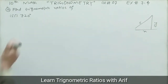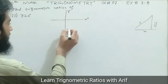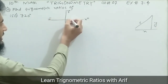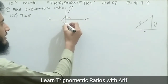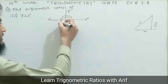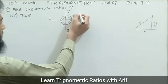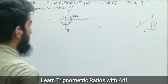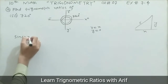Now finding the trigonometric ratios for part three: 720 degrees. Drawing the Argand plane with all four axes. Since the angle is positive, we move anti-clockwise. Each 90-degree interval: 90, 180, 270, 360 completes one full rotation; continuing, 450, 540, 630, and 720 completes the second full rotation. So 720 degrees lies along the positive x-axis, meaning the y-coordinate is zero.